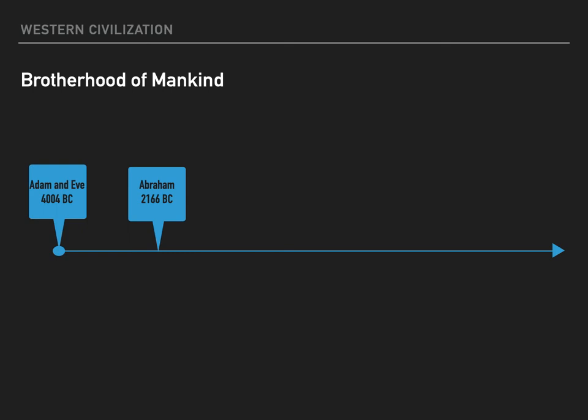The brotherhood of mankind starts with Father Abraham, who had a promise from God that his chosen people would come through his bloodline — Ishmael and Isaac. Ishmael is the son of Hagar, the father of the Arab nations, and Isaac is the promised son, father of Esau and Jacob. Jacob wrestled with God, lived through it, and was renamed Israel. His 12 sons make up the tribes of Israel. Jacob's son Joseph was sold into slavery by his brothers, and eventually all of Israel was enslaved in Egypt.